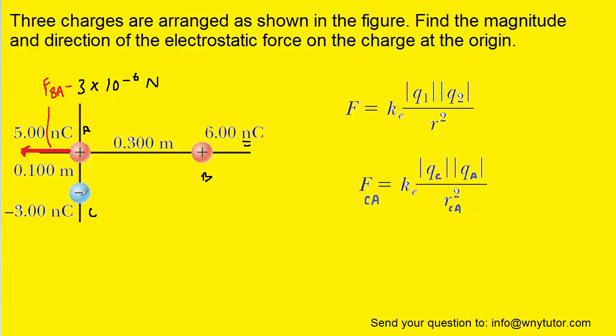Next, we're going to calculate the force that charge C is exerting on charge A. We're going to calculate F sub CA. We just have to plug in the charge of C and the charge of A, and then the distance between them, which is given as 0.1 meters. Here are the known values plugged in, and when we compute that, we should get approximately 1.35 times 10 to the minus 5 Newtons for the force that charge C exerts on charge A.